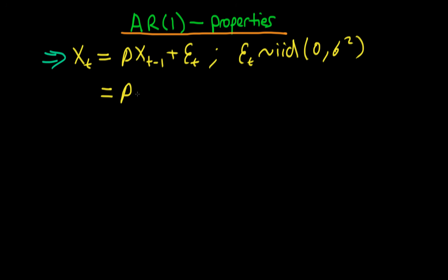So we can actually back substitute in for Xt-1 in this relationship, and then we get that this is equal to ρ times (ρXt-2 + Et-1) plus we've still got this Et left over.